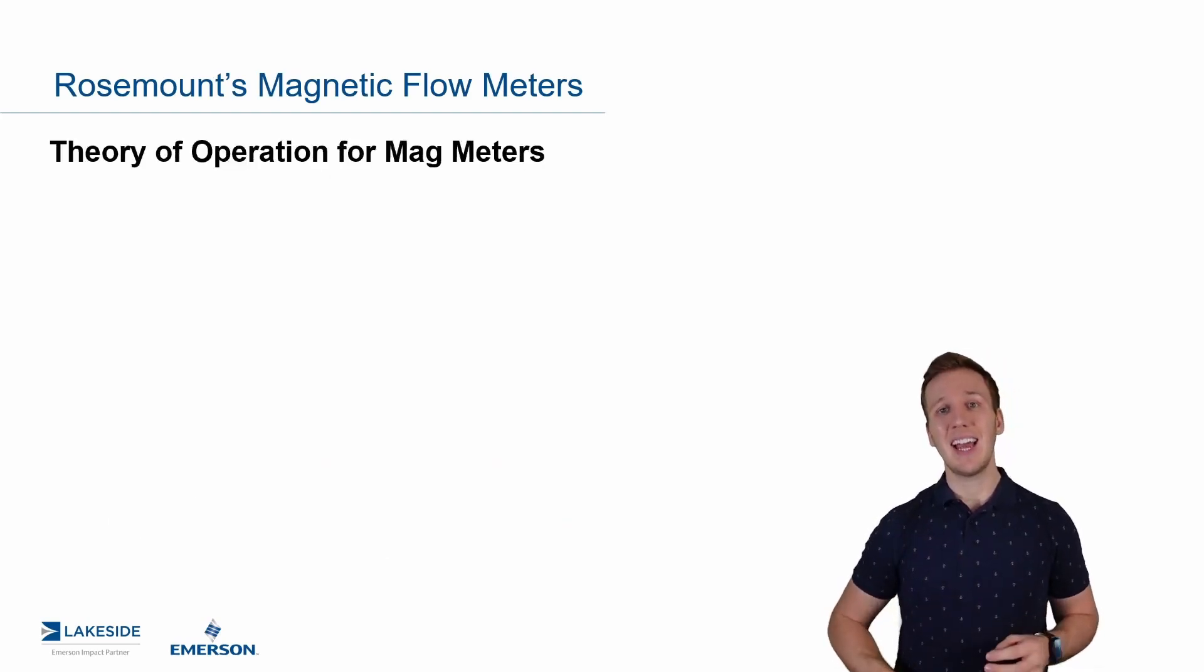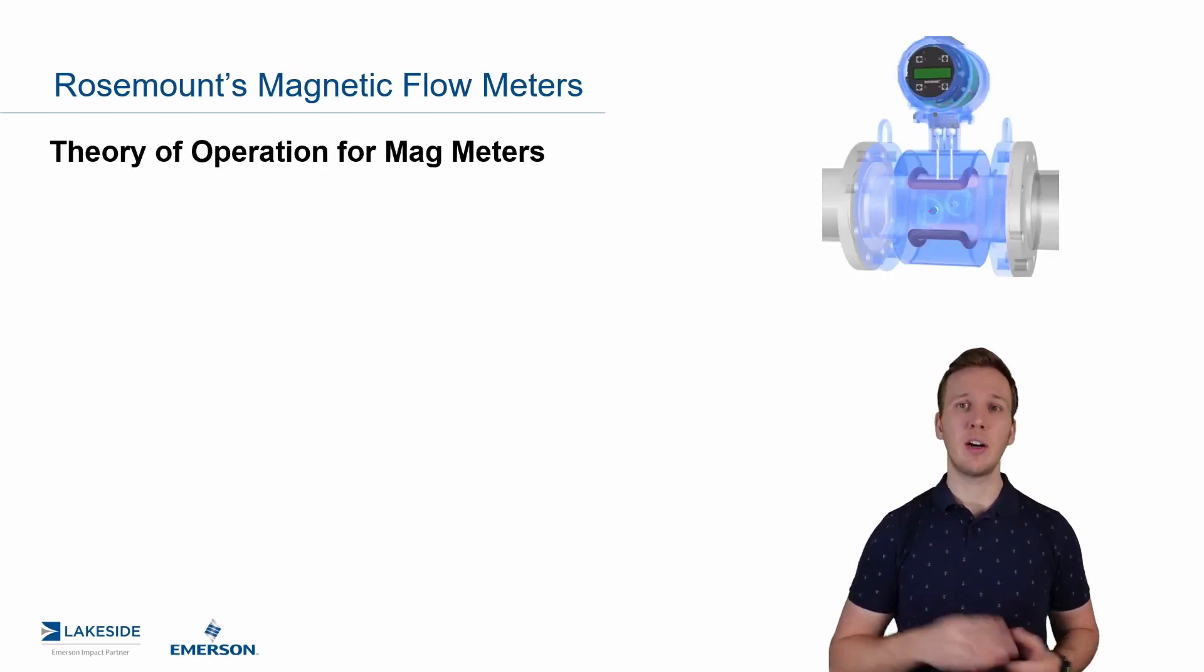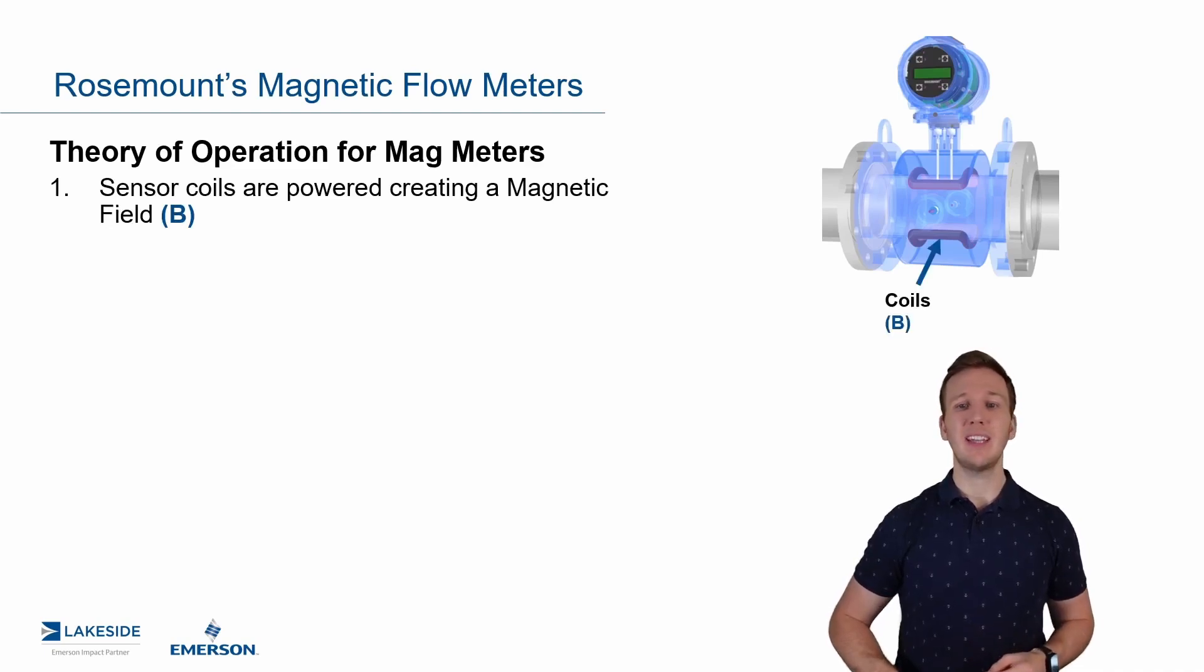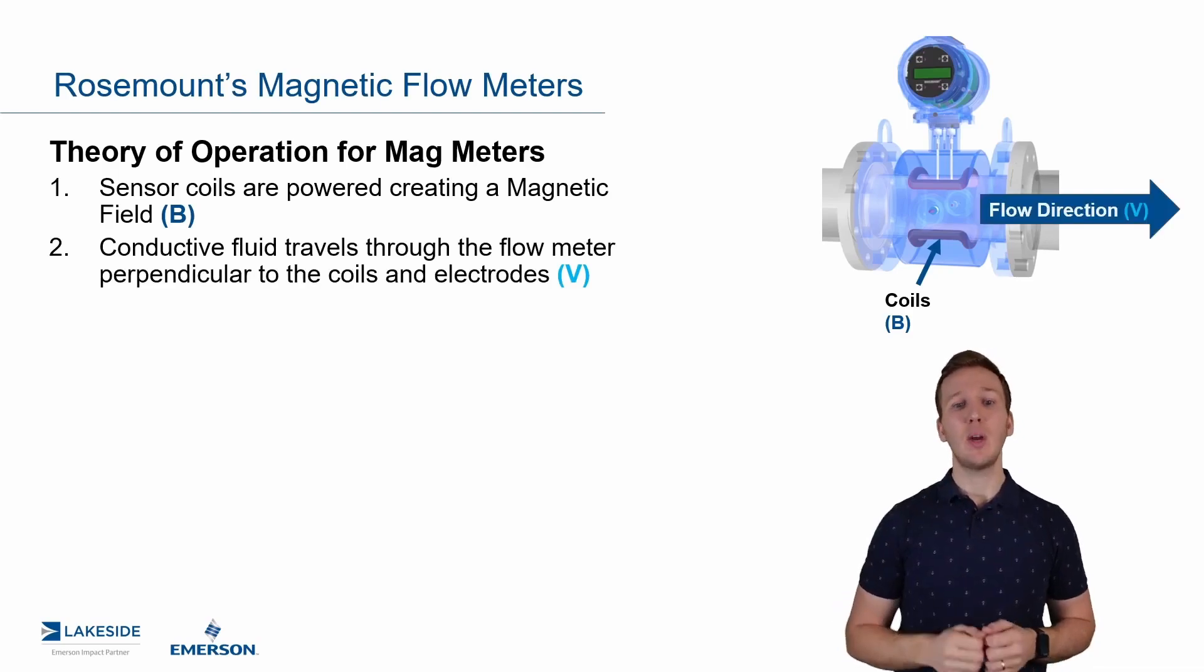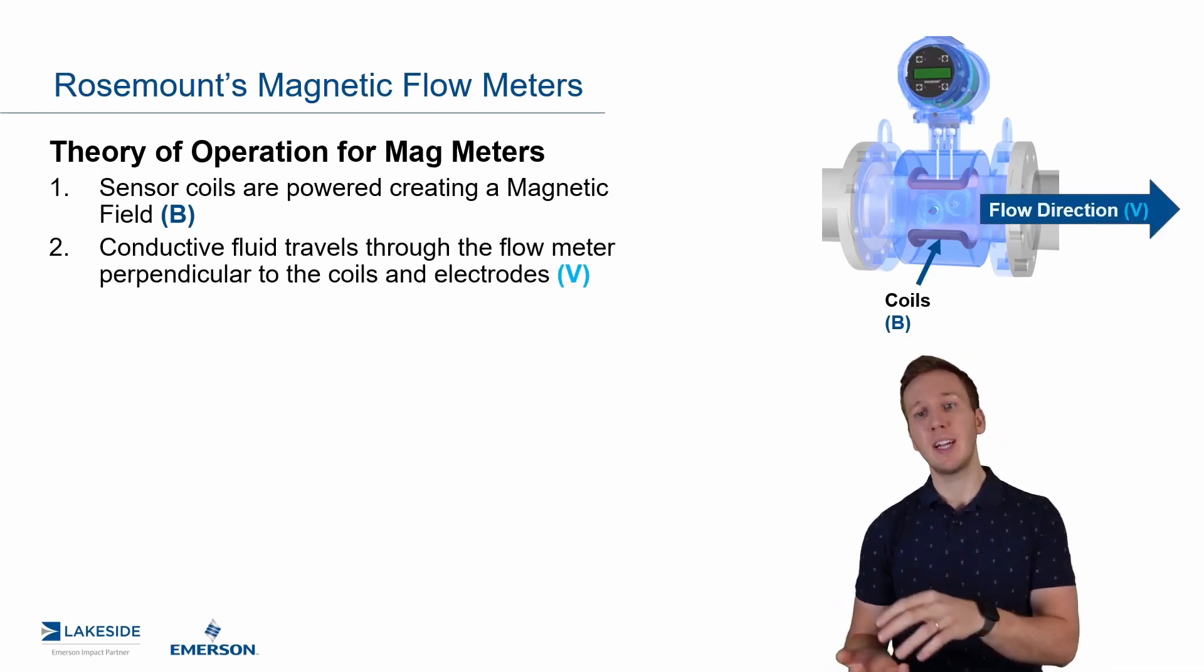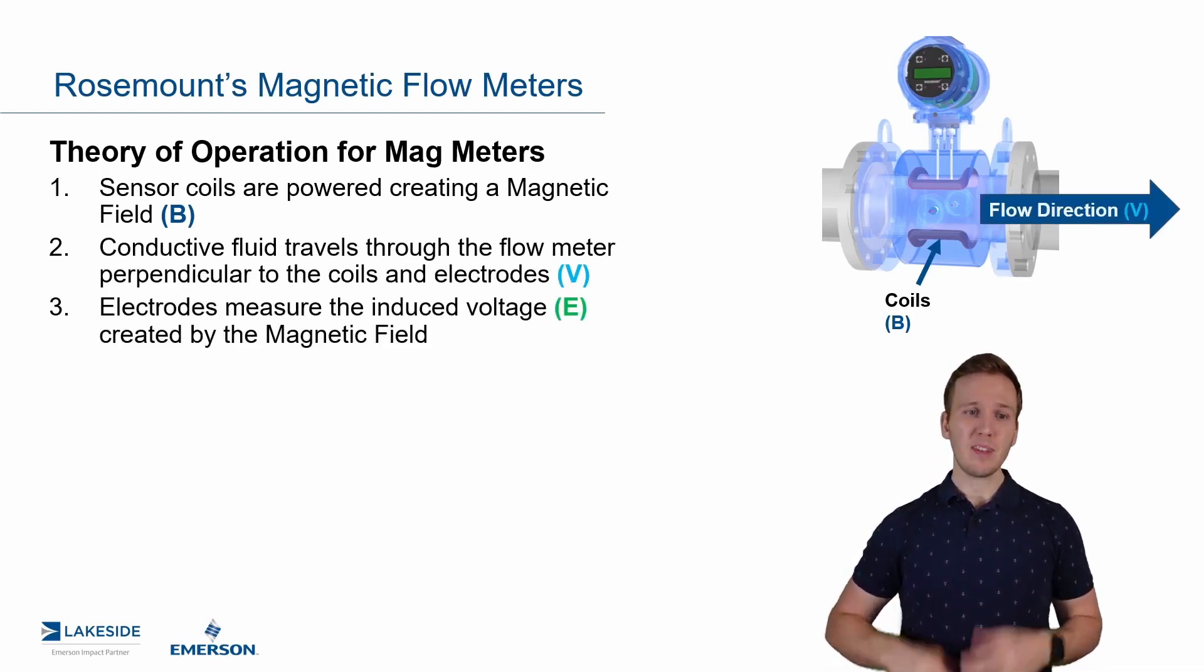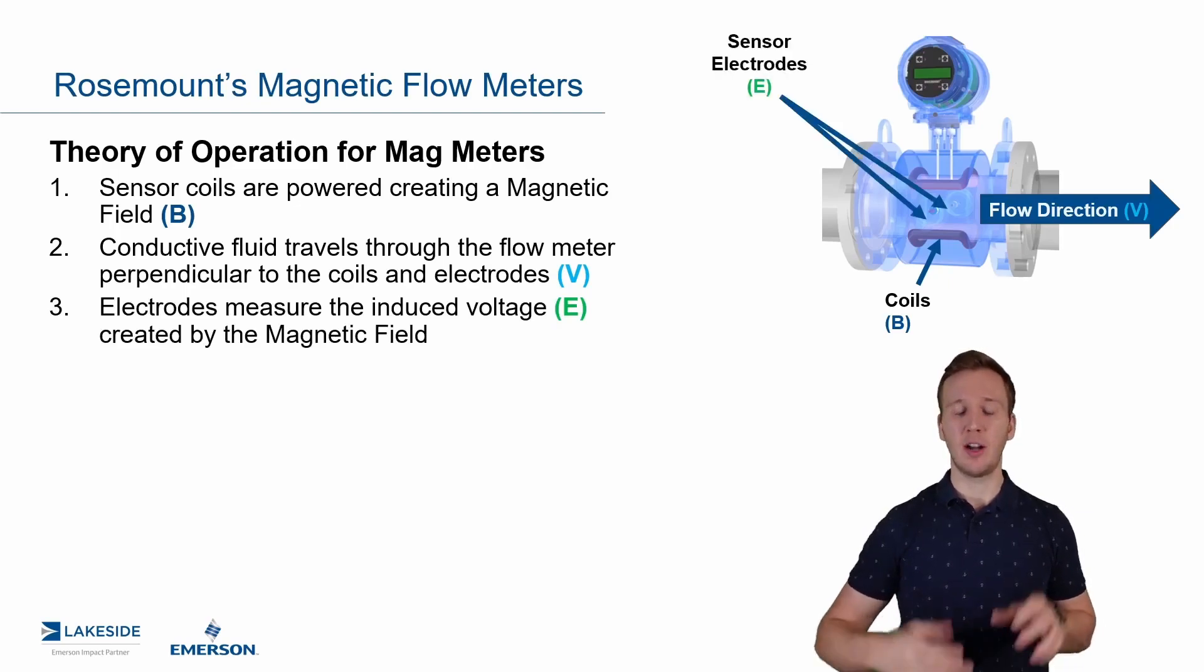Now, if we take an x-ray look at the magnetic flow meter here and go through some of the components, you'll see that our coils are kind of above and below that pipe, creating that magnetic field. We then have the flow traveling perpendicular to this. And then lastly, we have the electrodes, which are on opposite sides of that, measuring that induced voltage.